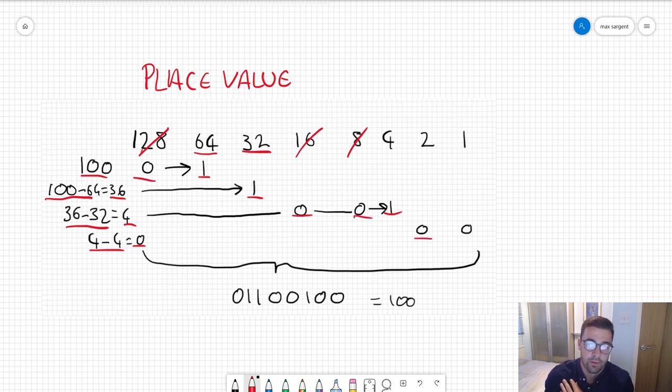We're on 0 now so everything else is 0. Collapse this down, you get this number here: 01100100 equals 100, and that's your conversion.